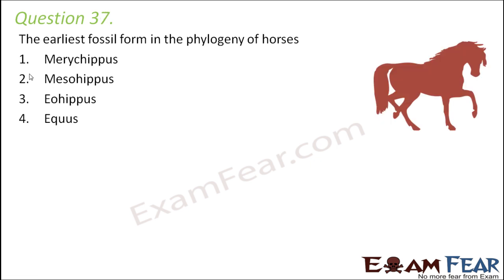Question number 37: the earliest fossil form in the phylogeny of horses is — Merrychippus, Mesohippus, Eohippus, or Equus? Looking at the evolution of horses: the first was Eohippus, then Mesohippus, then Merrychippus, then Pliohippus, and finally Equus. Therefore, the earliest form was Eohippus, which was also called the dawn horse and was very small in size — almost the size of a fox.